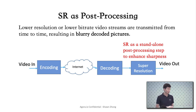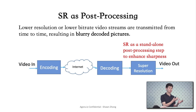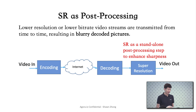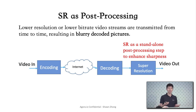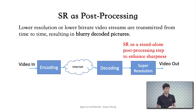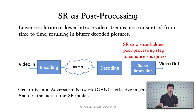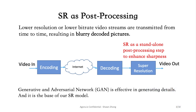You may be wondering why we don't apply it before encoding. The short answer is that detail-enhanced video will be harder to compress, and the details would be lost again after compression. So it's better to put it as post-processing. We know that generative adversarial networks have been very effective in generating details, so that is the base of our super resolution model.